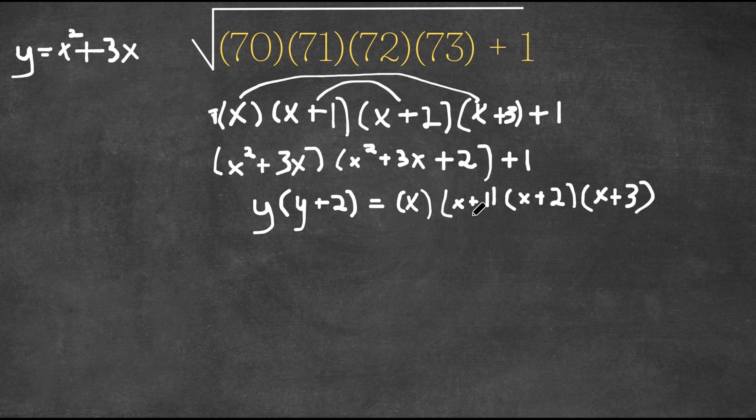So now if we multiply y times y plus 2, we would get y squared plus 2y, and we do still have our plus 1.